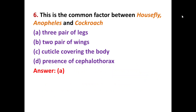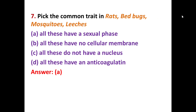MCQ number six: what is the common factor between housefly, Anopheles, and cockroaches? The correct option is A — all three have three pairs of legs. Cockroaches, houseflies, and Anopheles mosquitoes all have legs made up of three pairs.